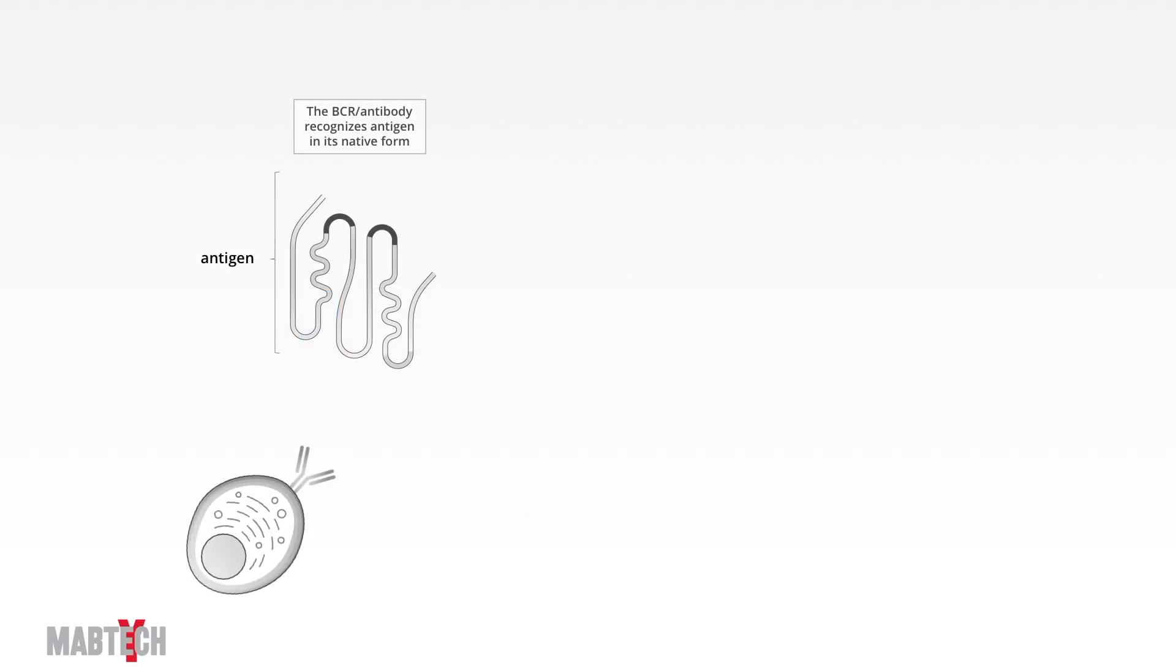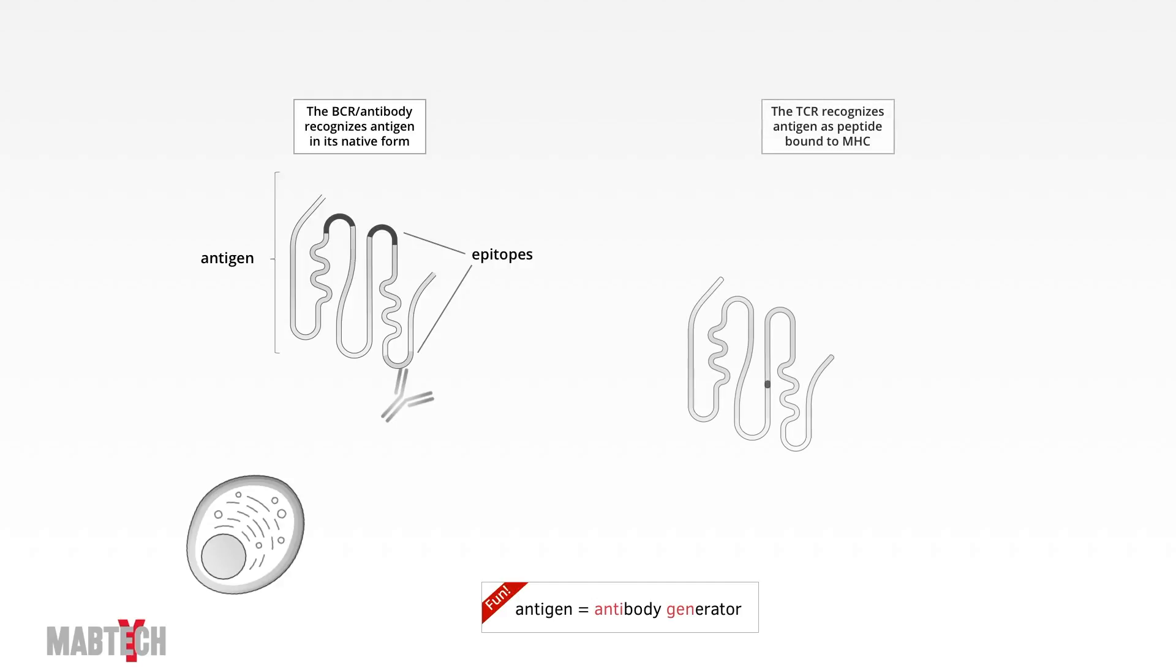The B-cell receptor, the BCR, can be secreted as an antibody, with identical epitope specificity as the original BCR. As seen, each antigen may have several immunodominant epitopes. The word antigen is actually an abbreviation of the phrase antibody generator. Since antigens are also triggering T-cell responses, I guess we have stopped seeing it as an abbreviation. I'd like you to note that the BCR and antibody recognizes the antigen in its native form.